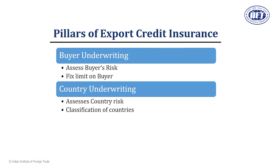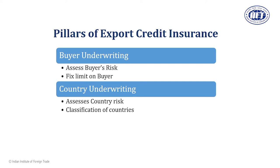Two most important things regarding export credit insurance that ECGC takes into consideration are the buyer's assessment and the country's assessment. Every cover ECGC provides will depend upon who the buyer is and in which country they are located. ECGC fixes a limit on how much risk will be covered depending on both the buyer and the country. ECGC has classified countries depending on the risk involved — certain countries are considered high risk, and export consignments going to these countries might receive lower percentage of risk coverage compared to safe or developed countries.